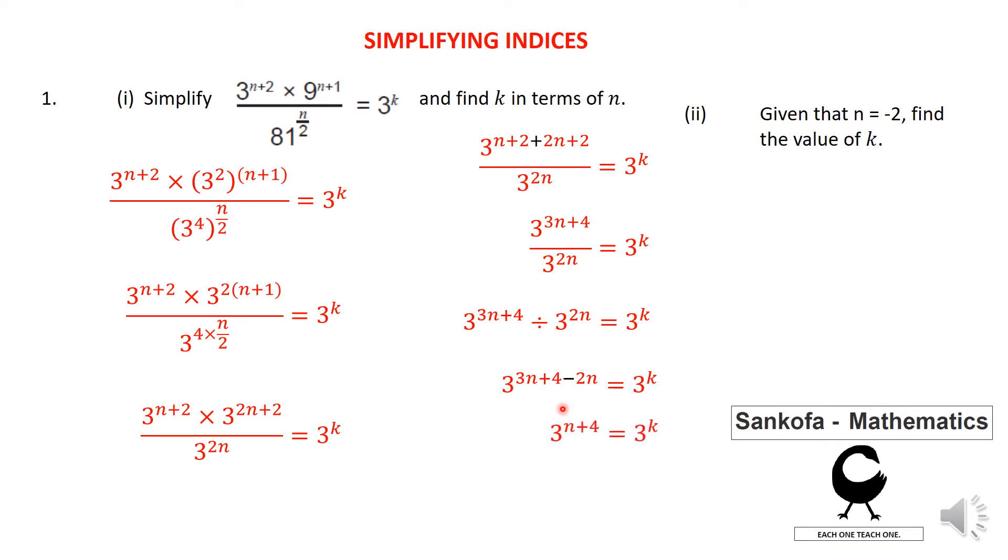And I'm left with n plus 4 is equal to k because now we can actually drop the bases. Therefore, k is equal to n plus 4. So the last part of this question says, now you are given that the value of n is equal to negative 2. So simply you are going to use that k equals to n plus 4, substitute negative 2 for n, and obviously that gives you the value of k which is 2.